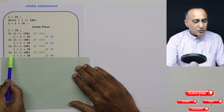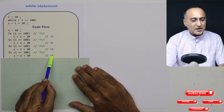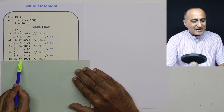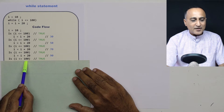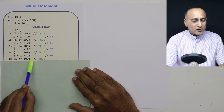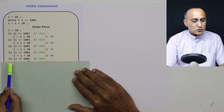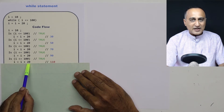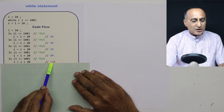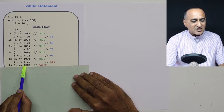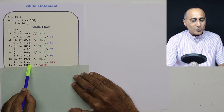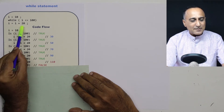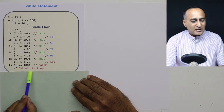So I increase i by 20 again — i now becomes 90. I again ask: is i less than or equal to 100? Now 90 is still less than or equal to 100, so the condition is true. So i is increased from 90 by 20, it becomes 110. Now when I ask: is 110 less than or equal to 100? This is going to fail. That's when it will not execute the statement i = i + 20, and it will come out of the loop.